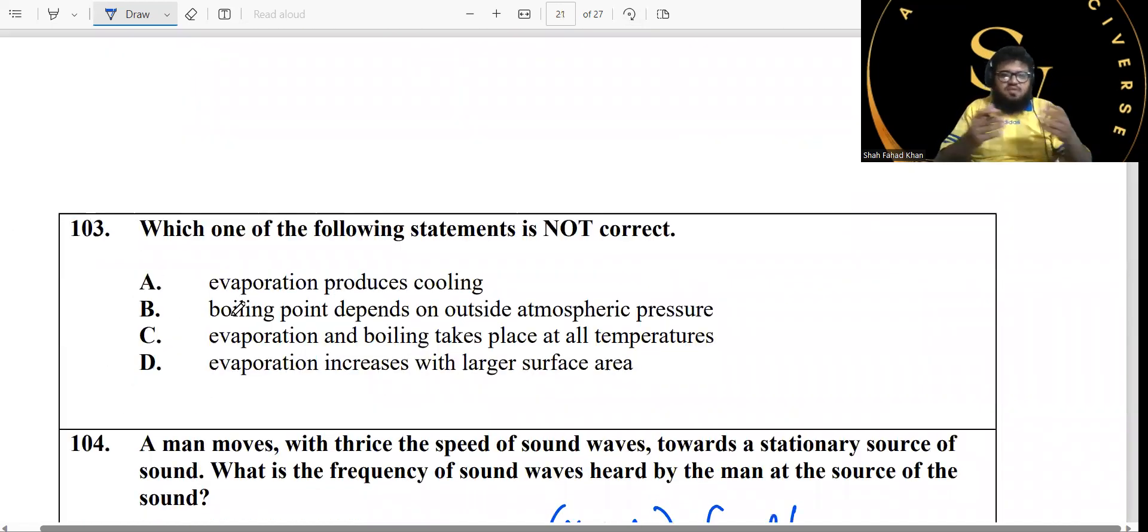Which of the following statements is not correct? Evaporation does produce cooling. Evaporation and boiling takes place at all temperatures. No, that's not correct. Boiling does not take place at all temperatures. It only takes place at the boiling point.